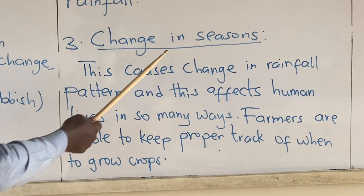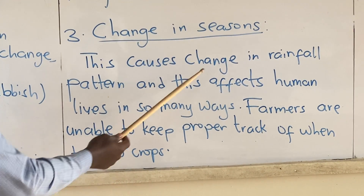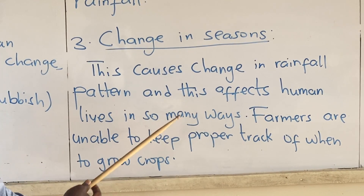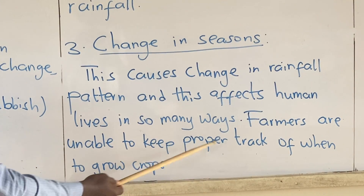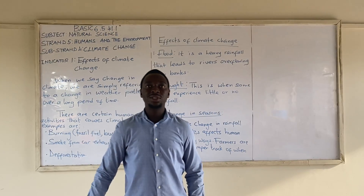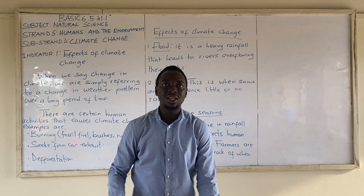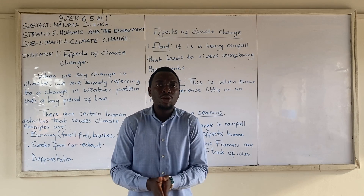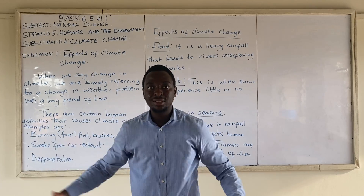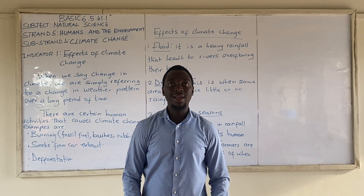Three, we have change in seasons. Climate change also leads to change in seasons, which causes a change in the rainfall pattern and affects human lives in many ways. Farmers are unable to keep proper track of when to grow crops. We are supposed to grow crops in the rainy season, but due to climate change, farmers cannot track weather conditions to know when to grow their crops. You may grow crops thinking next month will be rainy season, but there will be no rainfall due to climate change.